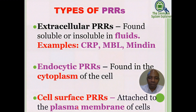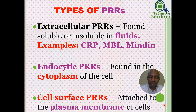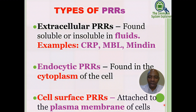The different types of PRRs include: extracellular PRRs, which are found soluble or insoluble in fluids — examples include C-reactive protein and mannose-binding lectin (MBL) as well as mindin. Endocytic PRRs are found in the cytoplasm of the cell. We also have cell surface PRRs, which are attached to the plasma membrane, and we will later discuss intracellular PRRs.